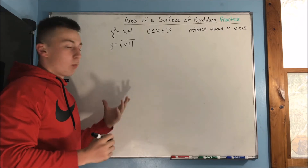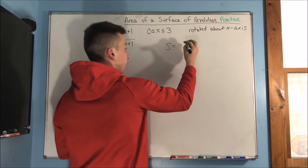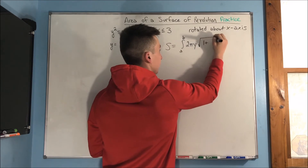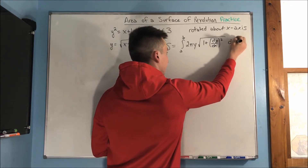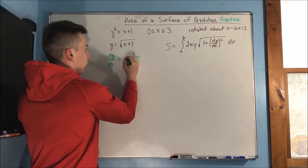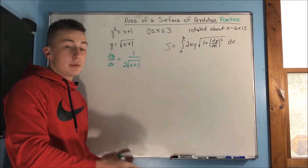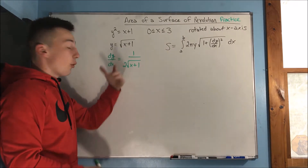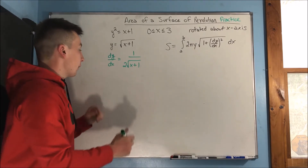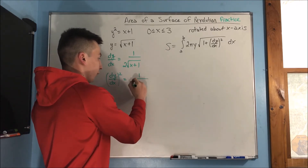Now, what's our formula? The surface area is going to equal the integral from a to b of 2π y times the square root of 1 plus dy/dx squared, dx. What is our dy/dx? That's just going to be 1 over 2 radical x plus 1 — just like the derivative of radical x is 1 over 2 radical x. Since x has no coefficient other than 1, we can disregard it. Now we square it to get 1 over 4 times (x plus 1).